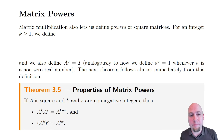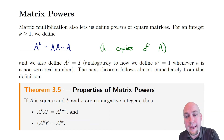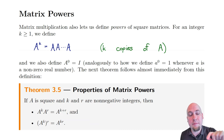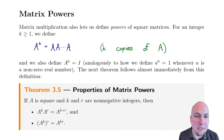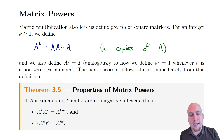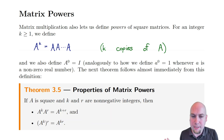A power of a matrix is just what you get if you multiply that matrix by itself a whole bunch of times. So A to the power k means A times A times A, where there are in total k copies of A. So for example, A squared — A to the power of 2 — that just means A times A. A cubed — A to the power of 3 — means A times A times A, and so on. This is in direct analogy with powers of real numbers: x cubed means x times x times x if x is a real number.